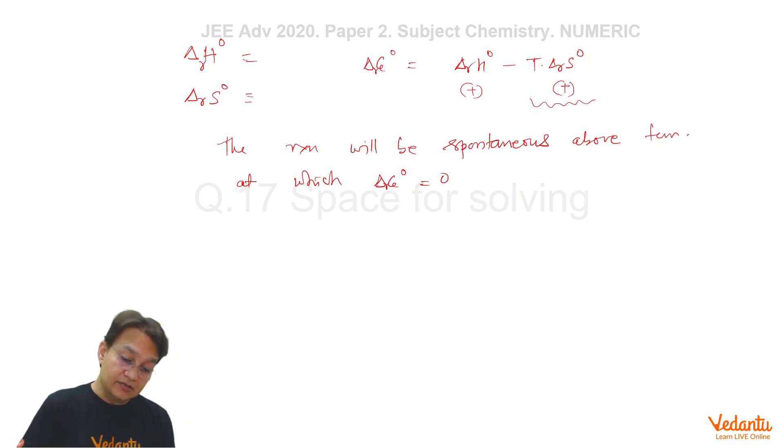To find this condition, we have to set delta RG0 equals 0, which gives you the temperature equals delta RH0 upon delta RS0. By doing this, you will get the temperature. Above this temperature, the reaction is going to be spontaneous because delta RG0 of this reaction is going to be negative.